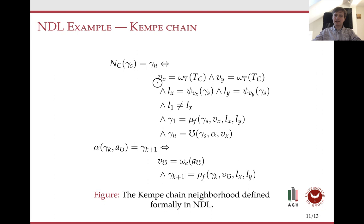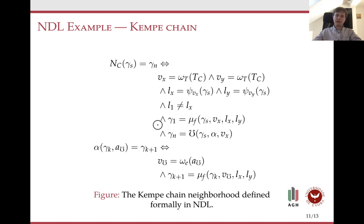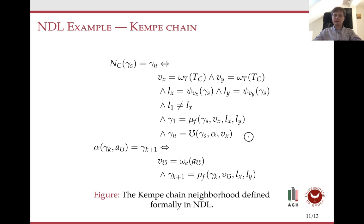In this line, we select two variables of a given type — essentially choosing two nodes in the graph. Then we make sure that the colors of those nodes are different. Then we change the color of the first variable, modifying the assignment. And finally, we use the list fixed-point combinator to fix the resulting assignment — we explore the graph and locally fix broken constraints.